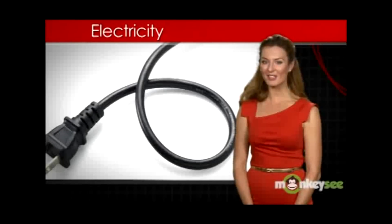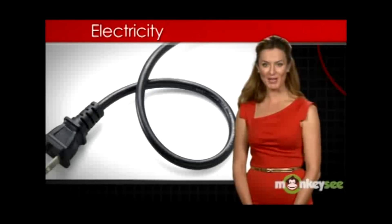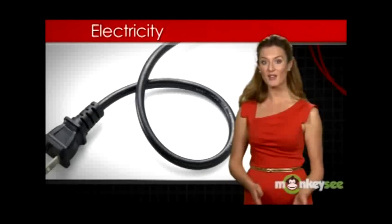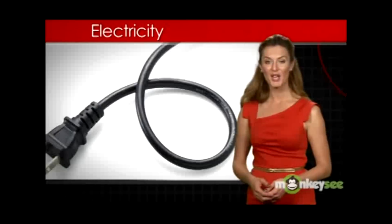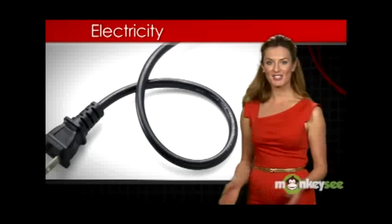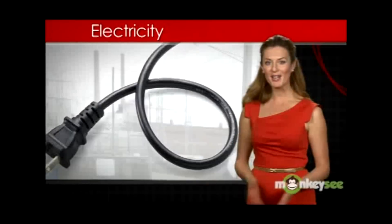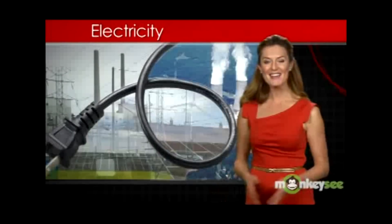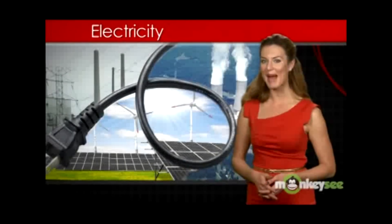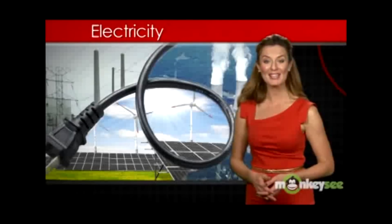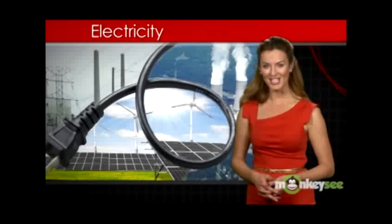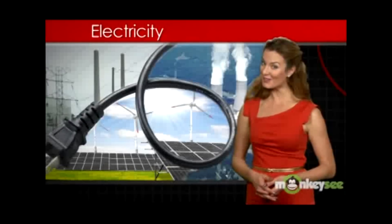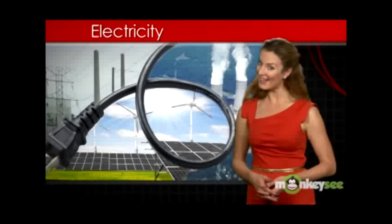Electricity is a secondary energy source, meaning we have to convert energy from another source into electric power. Sources of electricity include burning natural gas and coal, nuclear power, and natural sources of power such as wind, water, and solar energy. And that's the shocking truth about electricity.